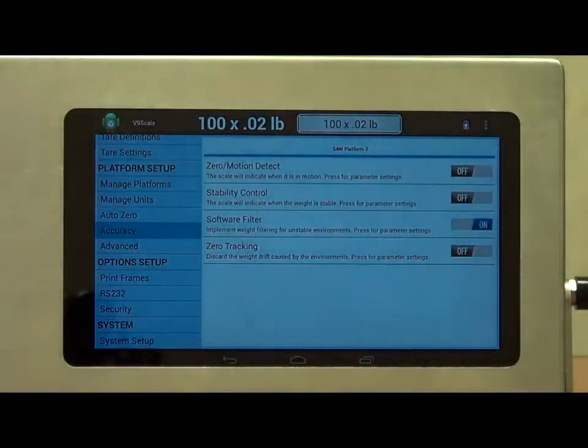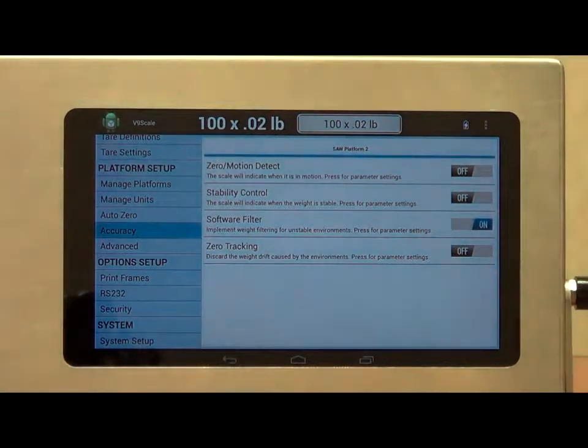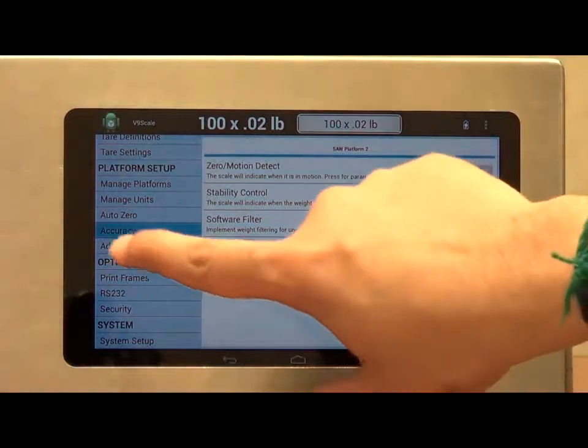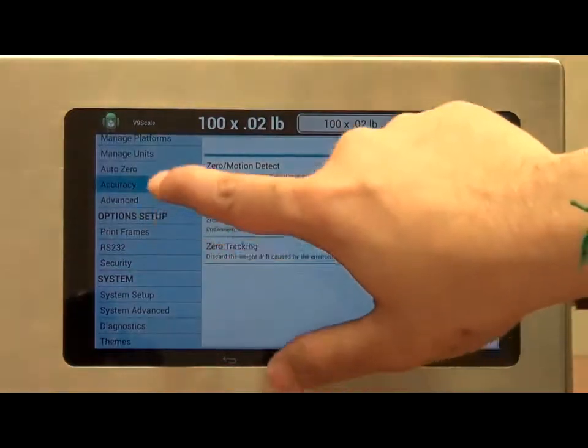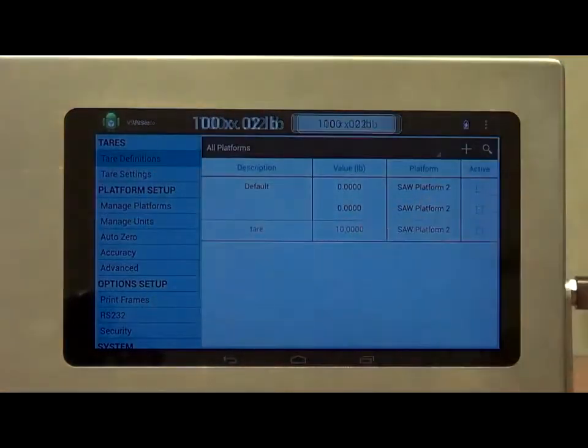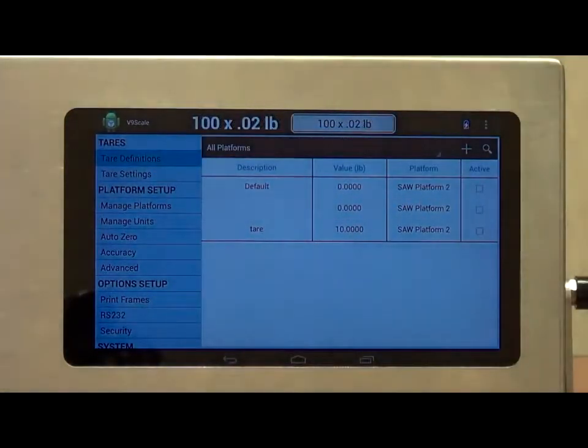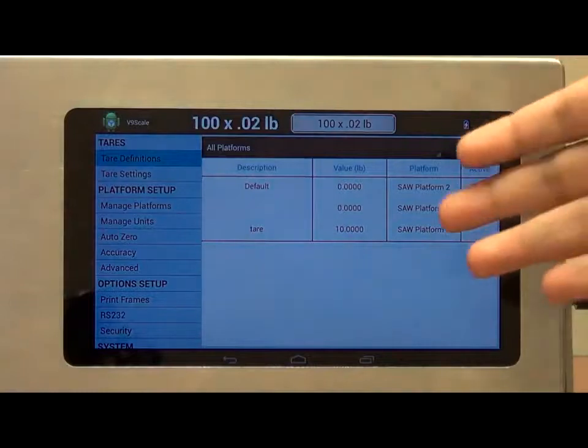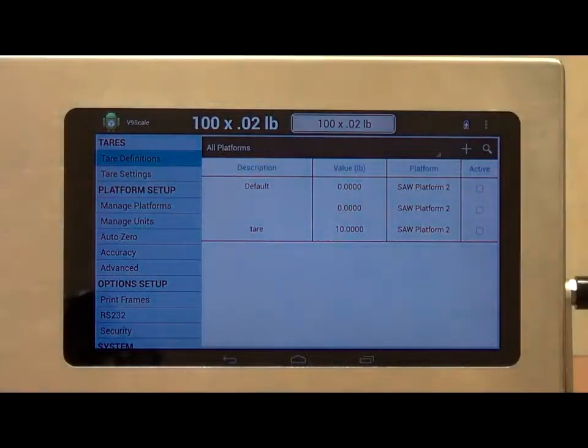Over here, we have a range of options for controlling the accuracy of the scale, such as zero motion detect, stability control, software filter, and zero tracking. Another thing I would like to show is tear definitions. We show the tears definition screen. We can see the different type of records that we have. We can store up to a hundred records. In addition to that, we want to show you this very cool feature called themes.